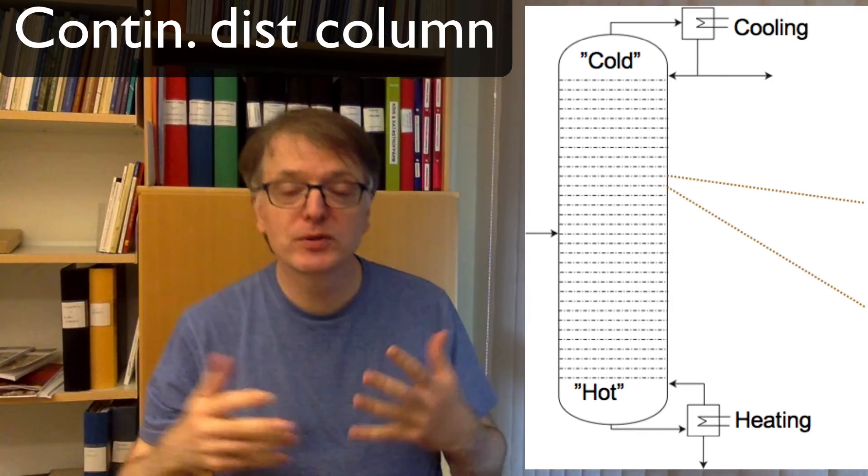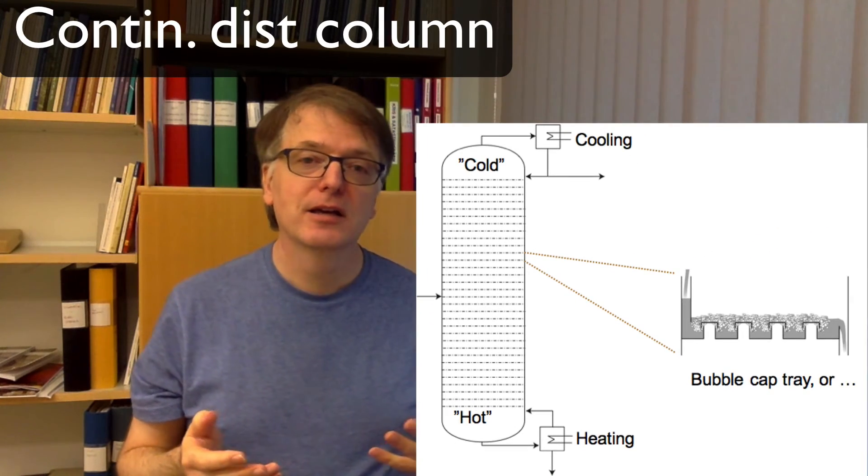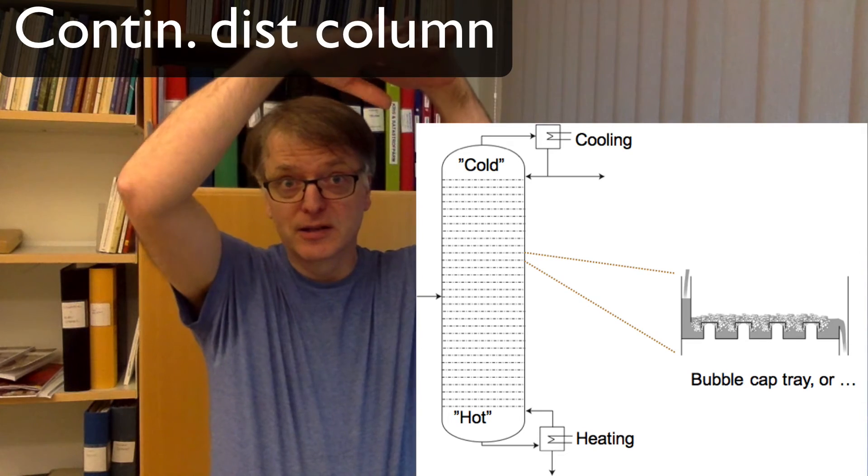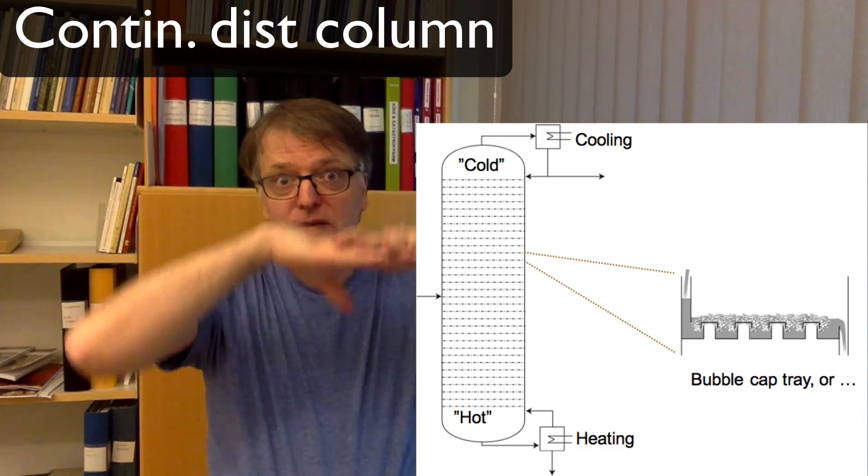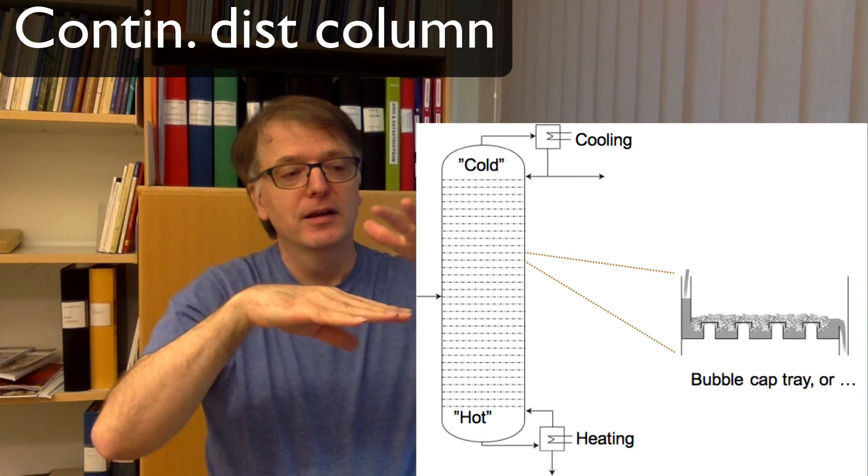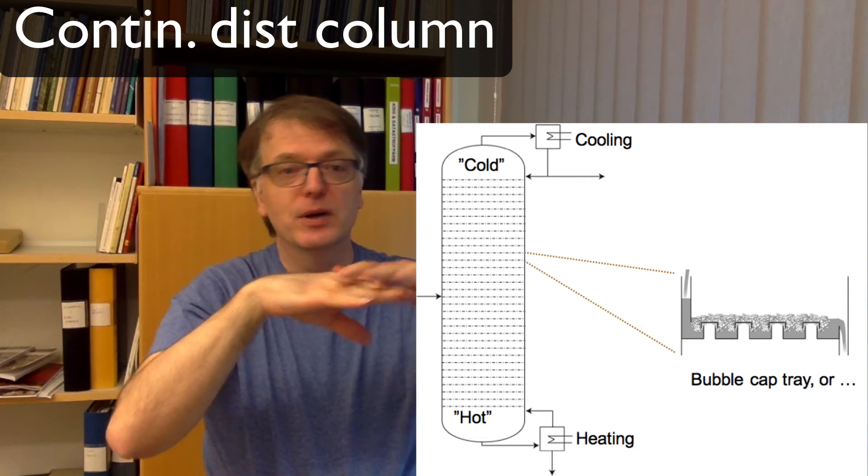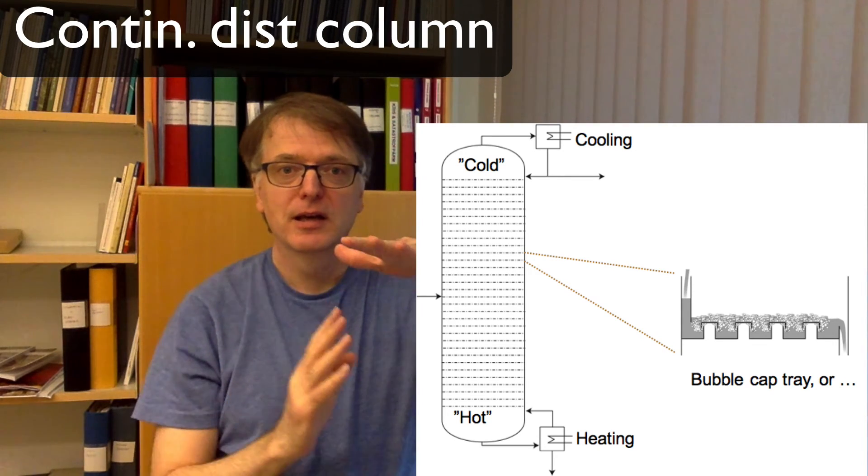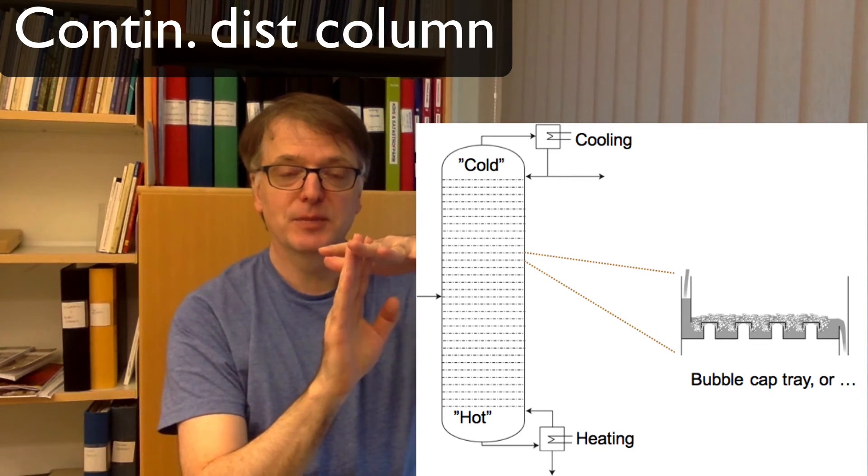But it doesn't look like pots, it instead looks like, in the simplest case it's just a sieve on each tray, each division here, and the sieve is there to make the liquid not fall so rapidly and to mix with the gas that comes up.